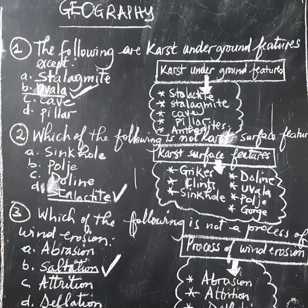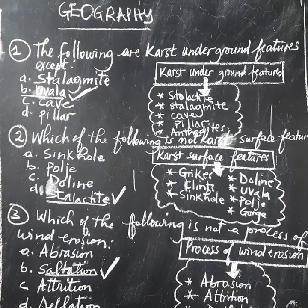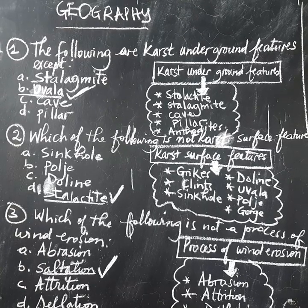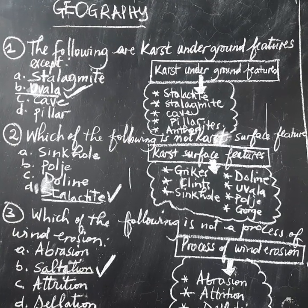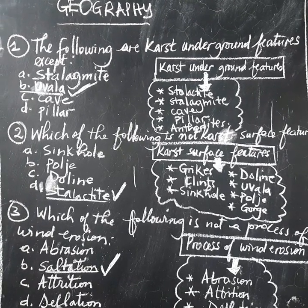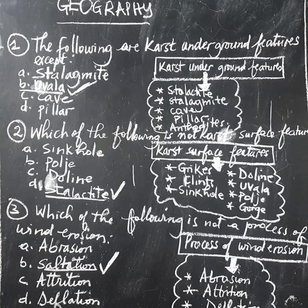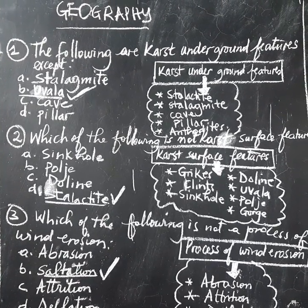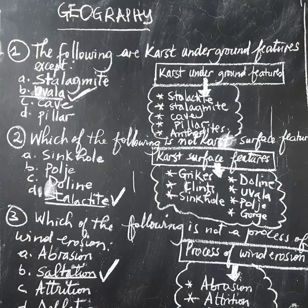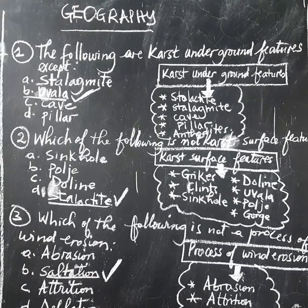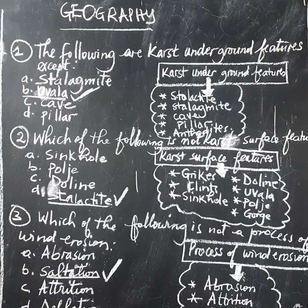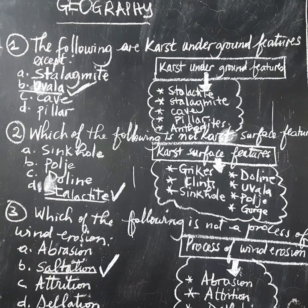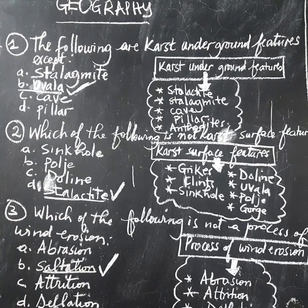Question number one is asking the following: the following are karst underground features, except. They give us underground features but want us to choose which one is not an underground feature. A: Stalagmite. B: Uvara. C: Cave. D: Pillar. The one which is not an underground feature is B, which is Uvara.